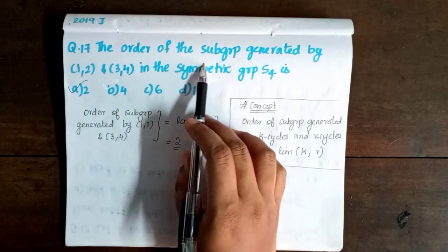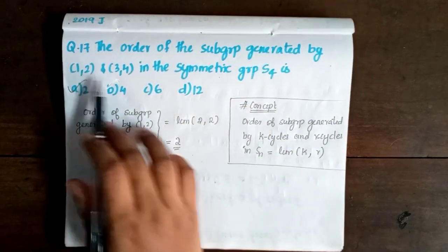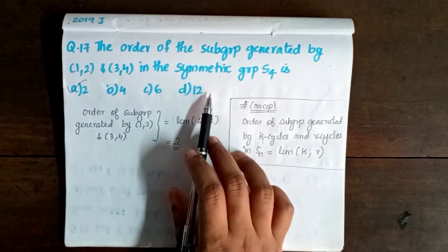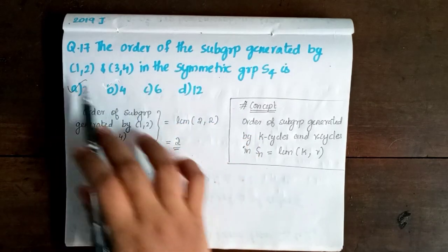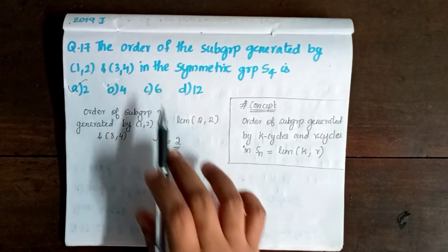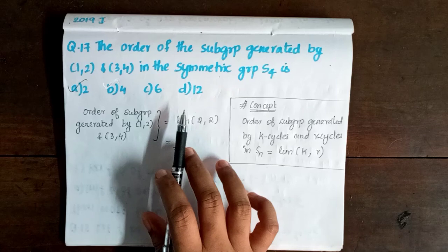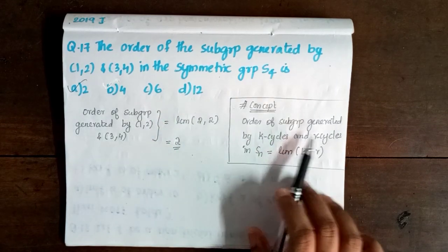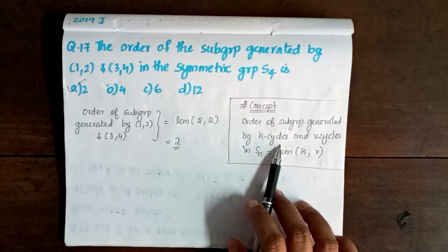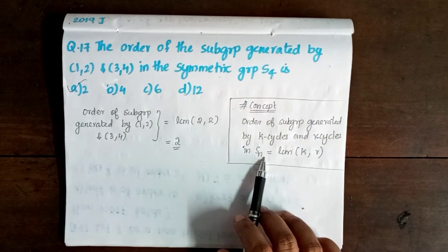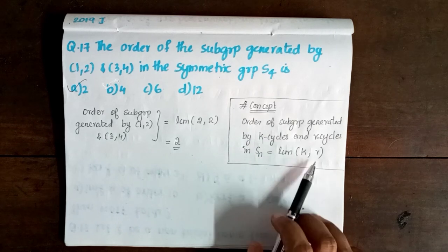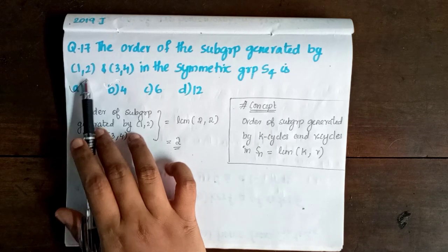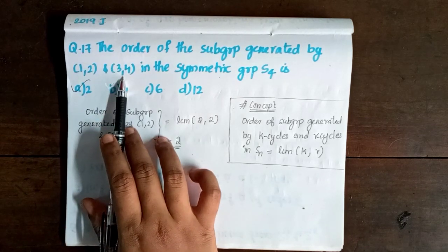The order of the subgroup generated by (1,2) and (3,4) in the symmetric group S4. The concept here is: the order of the subgroup generated by a k-cycle and an r-cycle in Sn is LCM of k and r. Here (1,2) is a 2-cycle and (3,4) is a 2-cycle.